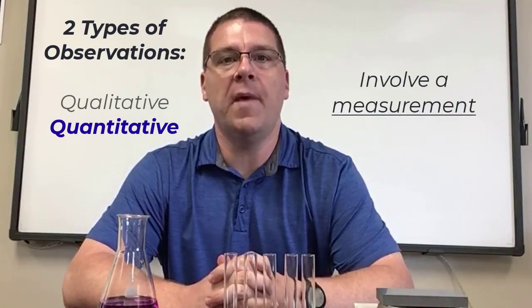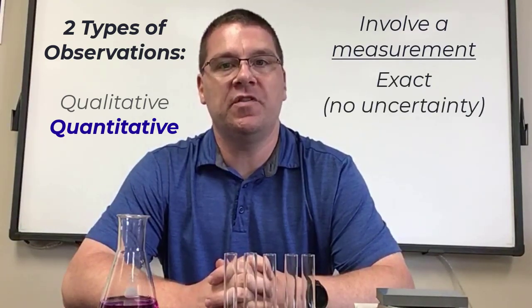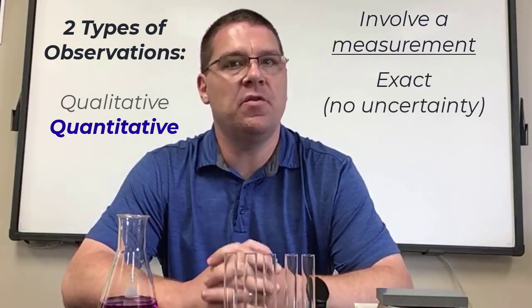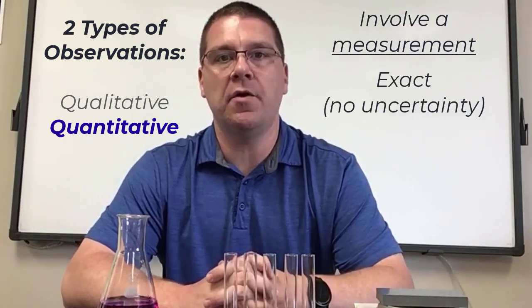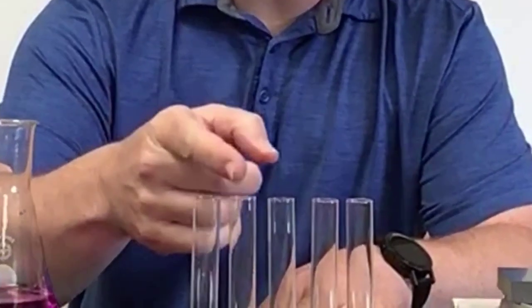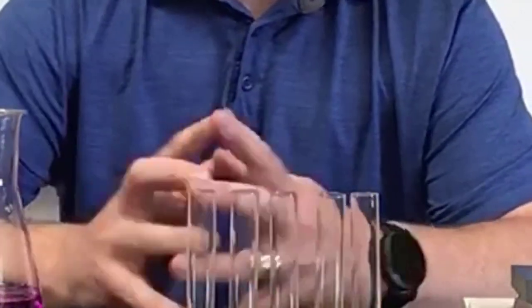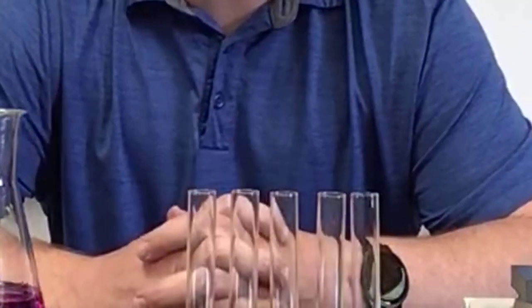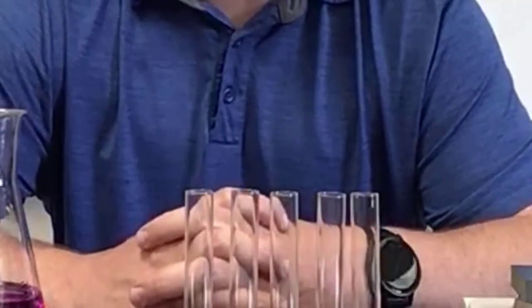Quantitative observations involve a measurement of some sort. Sometimes measurements are exact, meaning there is no uncertainty as to the true value. For instance, there are exactly five test tubes in the test tube rack. There is no uncertainty as to how many test tubes are present in the rack.